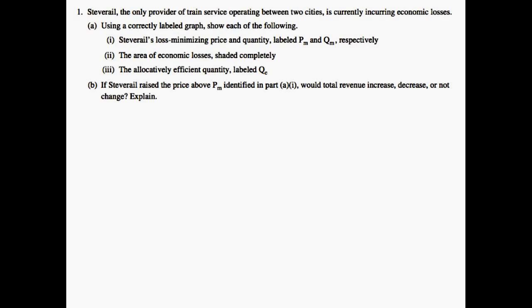This question states: Steve Rail, the only provider of train service operating between two cities, is currently incurring economic losses. Using a correctly labeled graph, show each of the following: Steve Rail's loss-minimizing price and quantity, the area of economic losses, the allocatively efficient quantity. And then we need to consider if Steve Rail raised its price above PM identified in Part A, would total revenue increase, decrease, or not change?